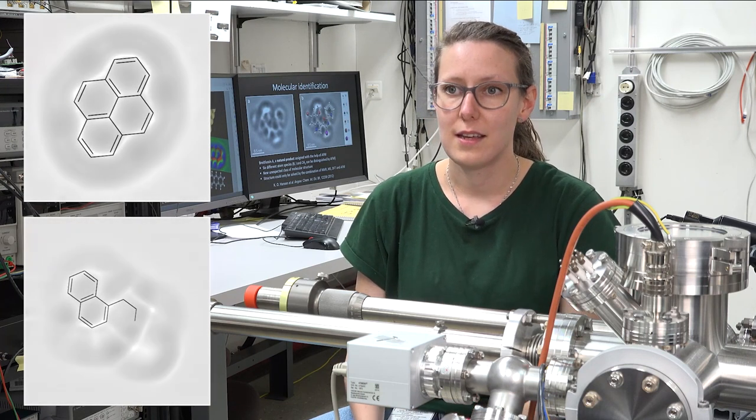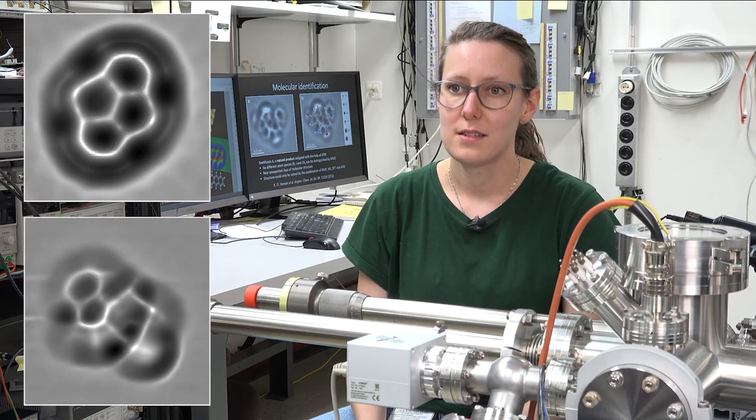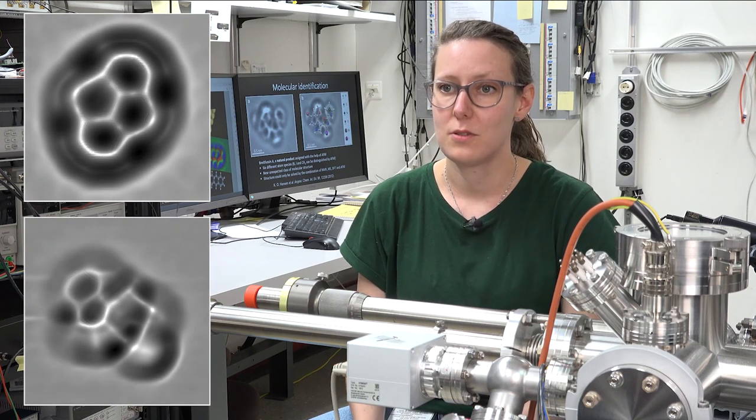That's how we then, in the end, really could have a look at single molecules from a meteoritic source. We got a sample of the Murchison meteoroid from NASA, and this we investigated using our low temperature AFM.